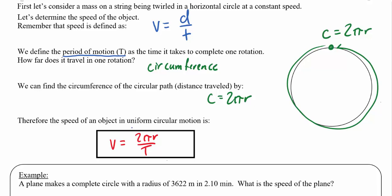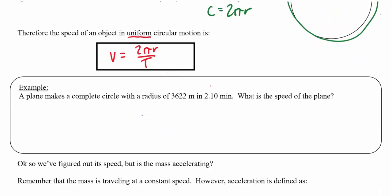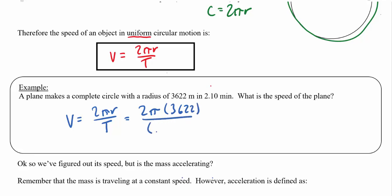Uniform motion means traveling at a constant speed — not speeding up or slowing down. For example, if a plane makes a complete circle of radius 3622 meters in 2.1 minutes, the speed is 2π times 3622 divided by (2.1 × 60 seconds), which works out to about 181 meters per second.